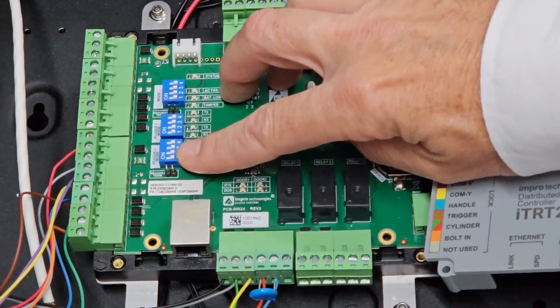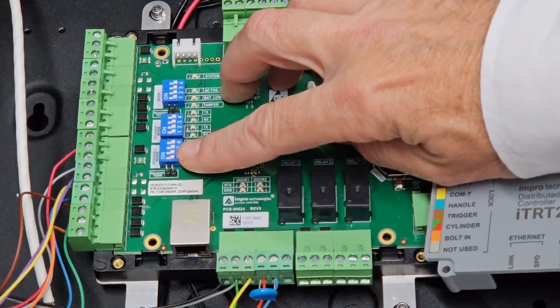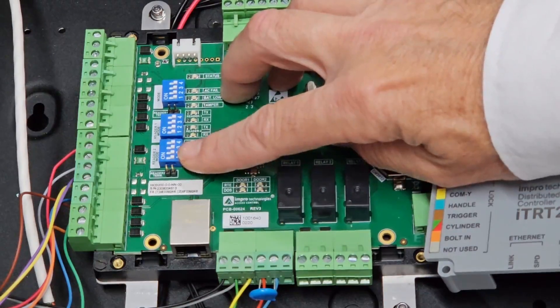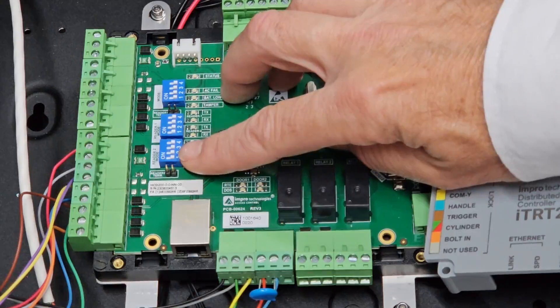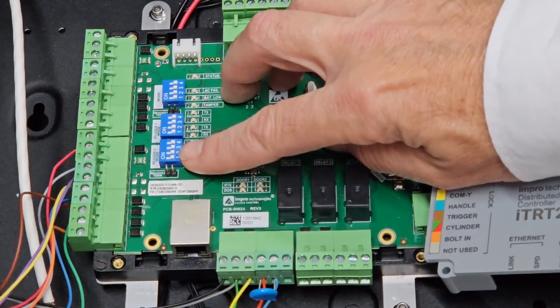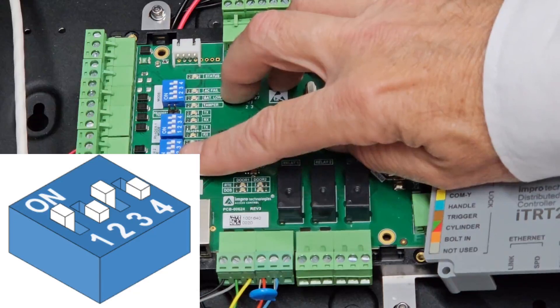These bottom switches, the reader 2 switch, will set up how many OSDP readers will be connected to the reader port. In this installation, we will have both entrance and exit readers, so we need to set this to 1010, that's on-off, on-off.